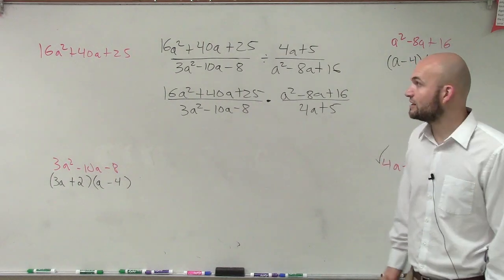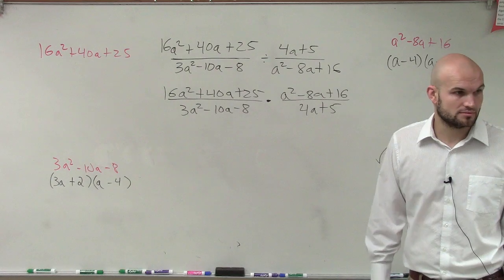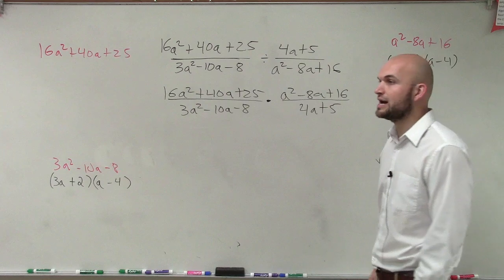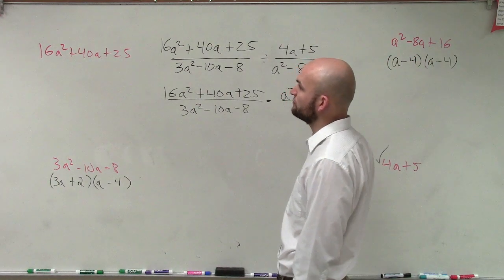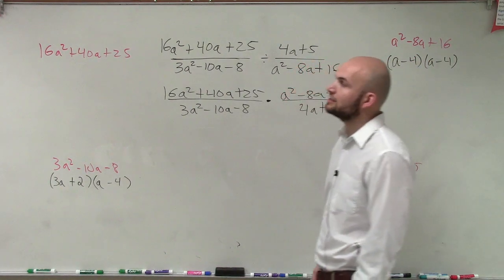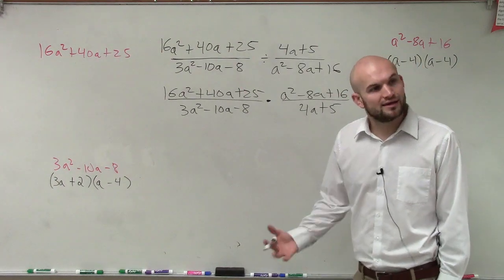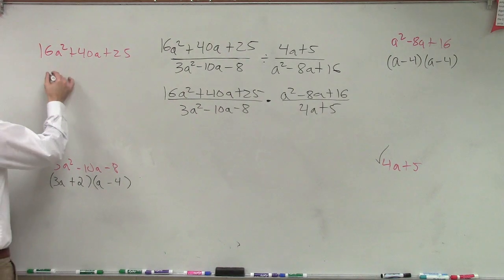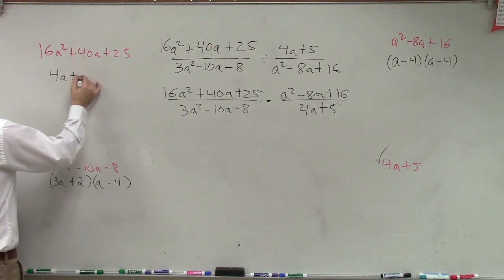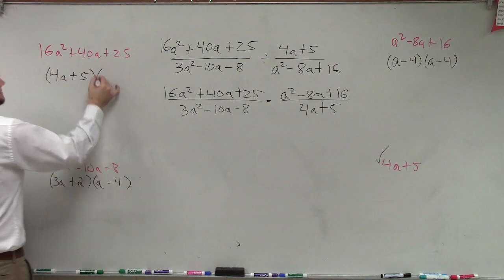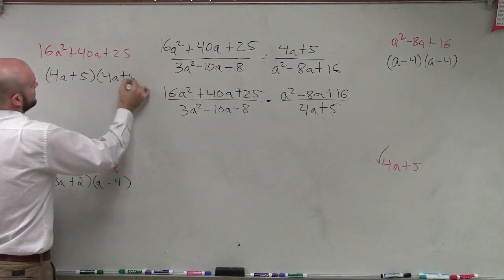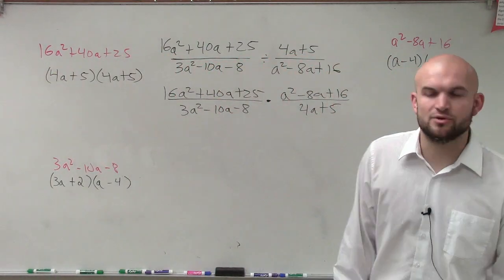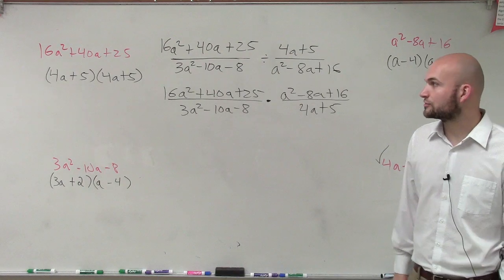And then if I did 2 times your perfect squares, so 4 times 5, which would be 20, times 2 equals 40. Hey, this is a perfect square trinomial. Which means I can write this as 4a plus 5 times 4a plus 5. It's a perfect square trinomial, meaning it's really 4a plus 5 squared. That's the factored form.